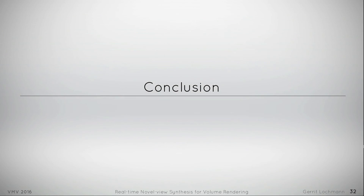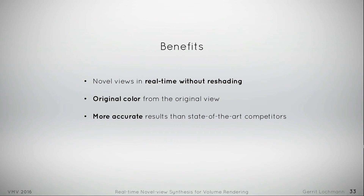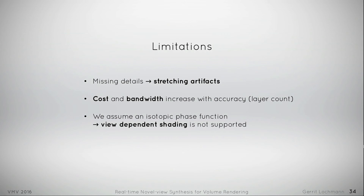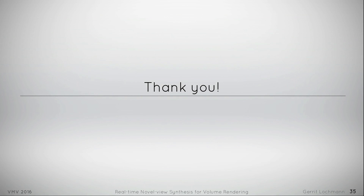To conclude, our algorithm produces novel views in real time without reshading, and in the original view the original color is preserved. The algorithm provides more accurate results than state-of-the-art competitors. But there are still some limitations: missing details of covered regions lead to stretching artifacts, and cost and bandwidth increase with accuracy since the layer count increases as well. We assume an isotropic phase function, and the problem here is that view-dependent shading is not supported. With this, I want to close my talk. Thanks for your attention and goodbye.